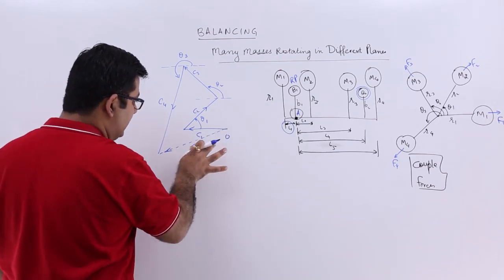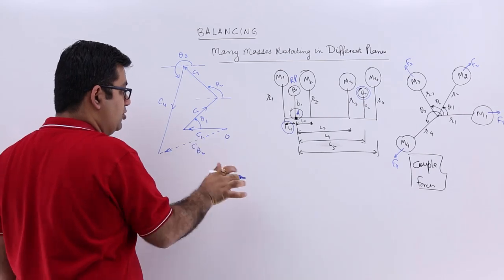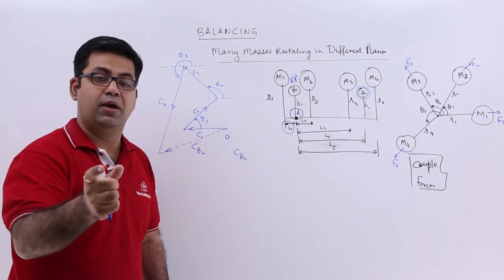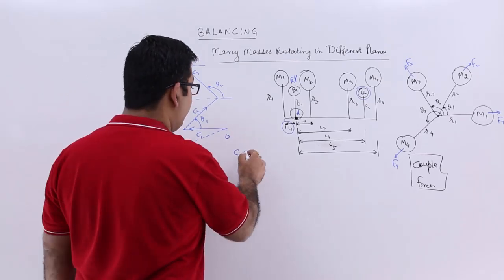So with the help of this length, CB2 as per a scale will be some value converted to the couple within it.